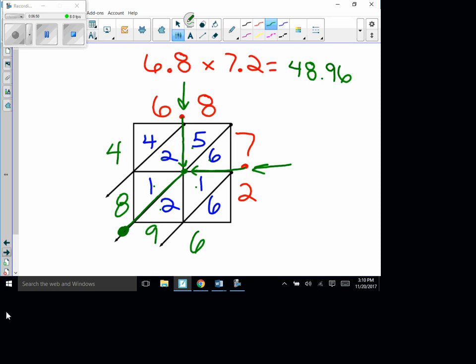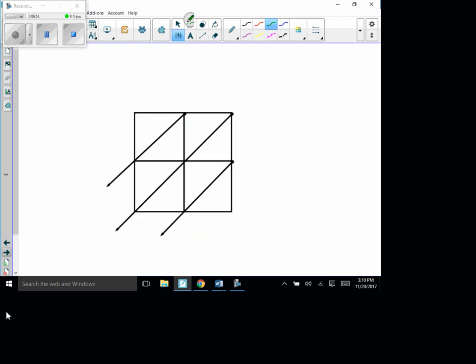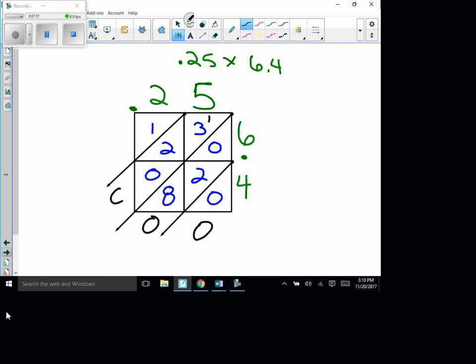All right, let's give another one. Okay, we have 0.25 times 6.4. So 0.25 and 6.4. Okay, let's answer them. 6 times 5 is 30, 6 times 2 is 12, 4 times 5 is 20, and 4 times 2 is 8. Okay, so then let's add them. 0, and then 2 plus 8 is 10, carry the 1, 4, 6, and then 1.